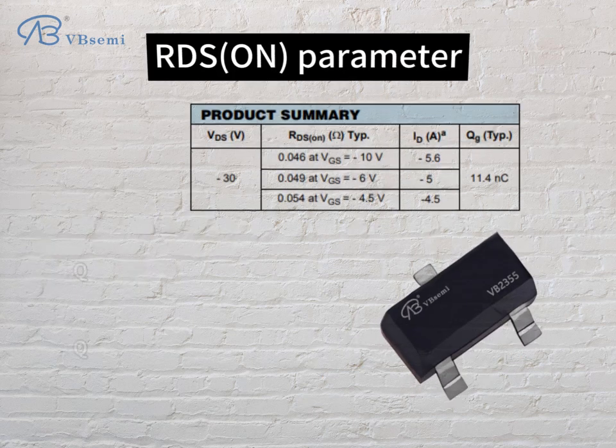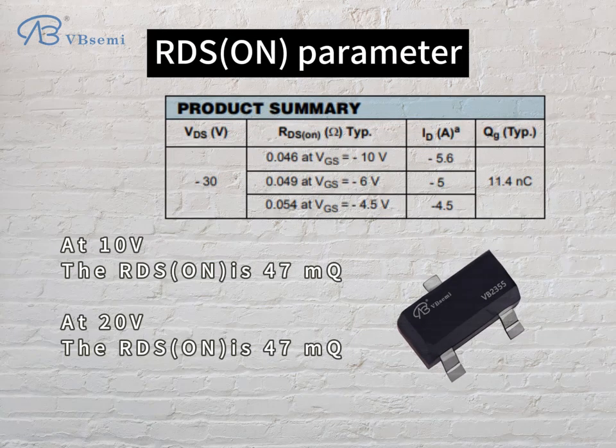RDS(on) parameter: at 10V, RDS(on) is 47mΩ. At 20V, RDS(on) is also 47mΩ.